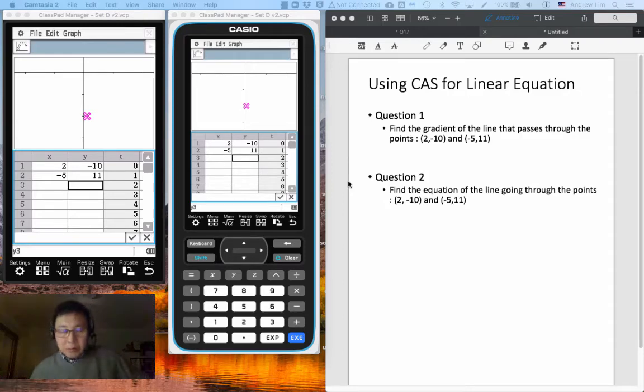Equations, mainly to find the gradient of a line that passes through two points and also to find the equation of the line that passes through two points. Of course, you could do it manually, which I've taught in class and will be shown in other videos. But I'm going to show you how to use the CAS in this case.